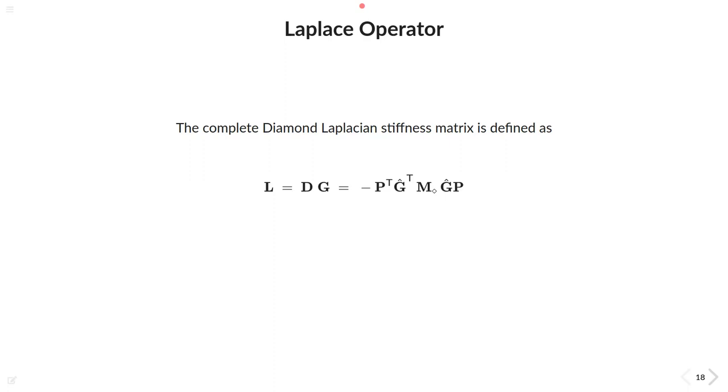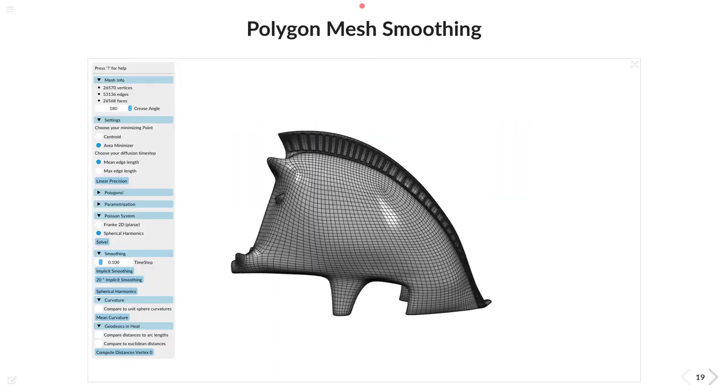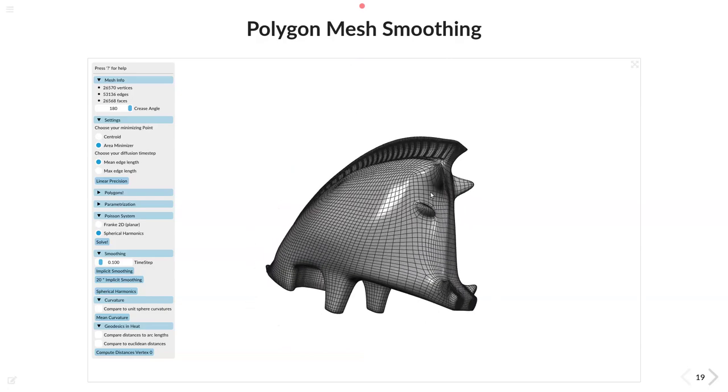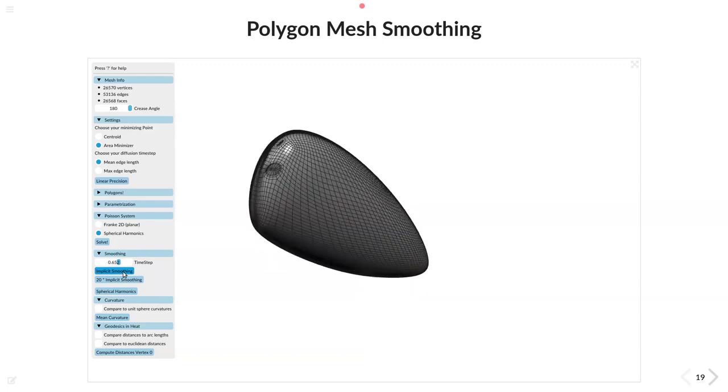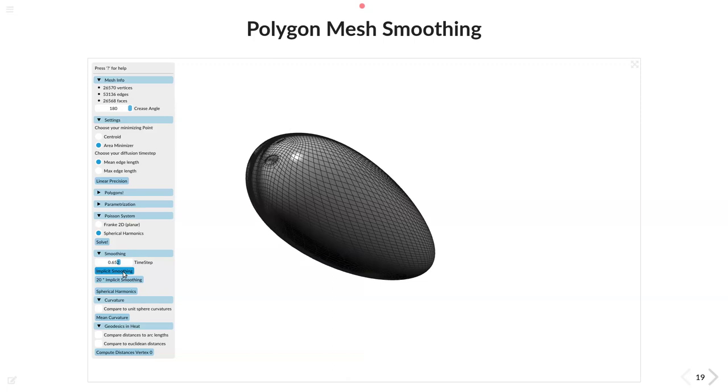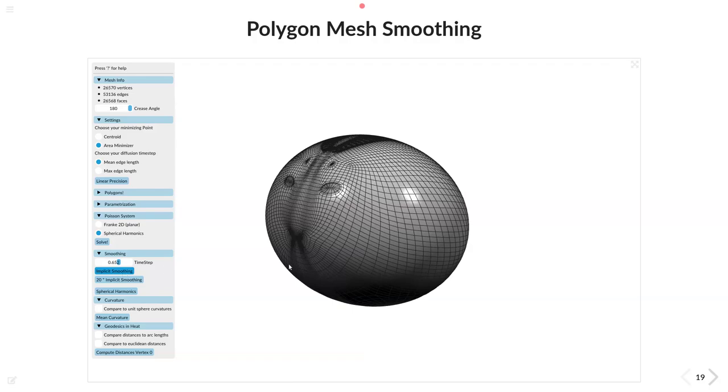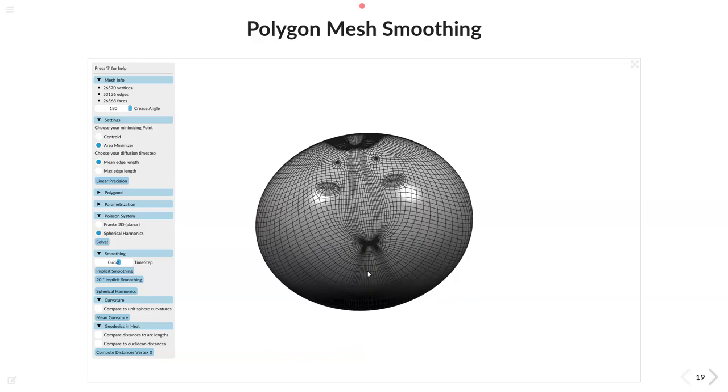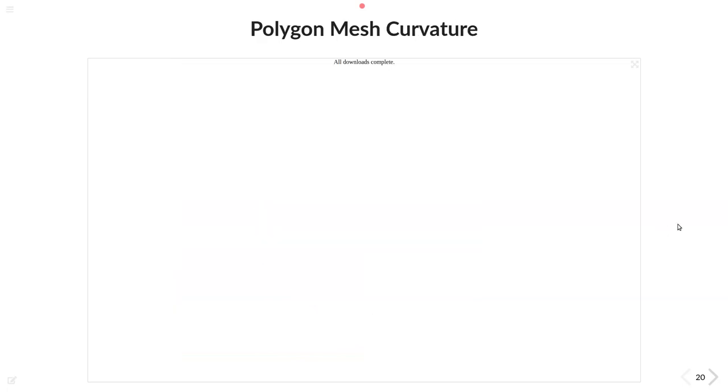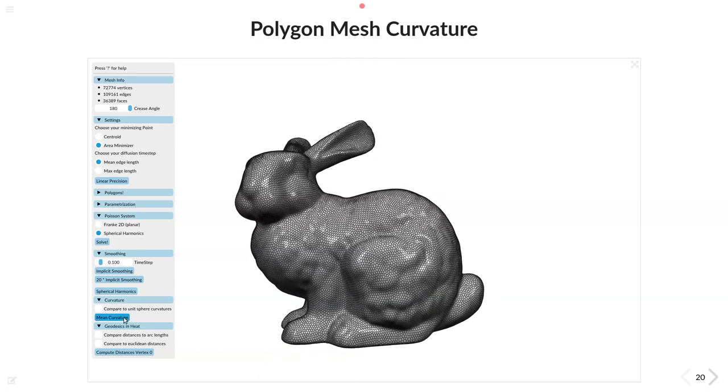And now we have all that we need and can look at the performance of our operator. Let's start with some qualitative demos for you. Here I'm given a quad bar and here for example I can smooth it into a more spherical shape with several time steps, getting rid of all the bumps and bridges of my initial mesh and shaping it to a more spherical form.